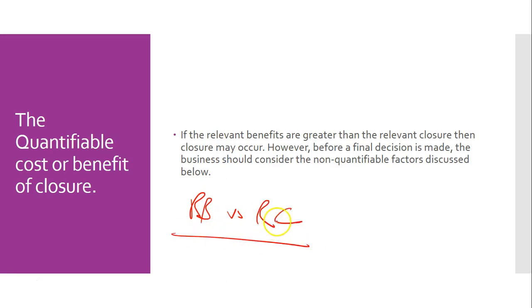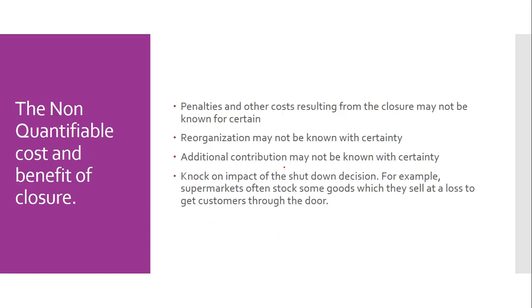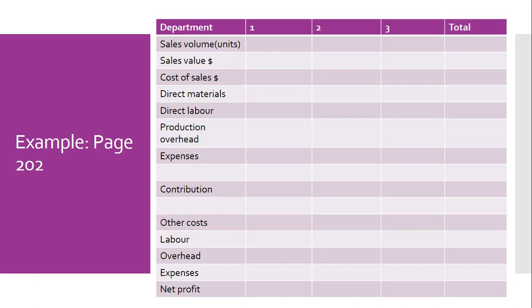The focus is really about comparing relevant benefits versus relevant closure costs. There are also non-quantifiable factors — reputation, uncertainty about the level of reorganization involved, and additional contribution that may not be known with certainty. So even if the numbers tell you to close, you have to think carefully before making that decision.